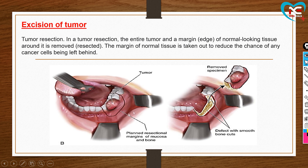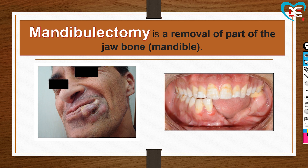In surgical management, wide excision is performed — extra tissues surrounding the cancer are also cut and removed so that any spread to nearby tissue is also eliminated. A margin of normal tissues is taken out to reduce the chance of any cancer cells being left behind.